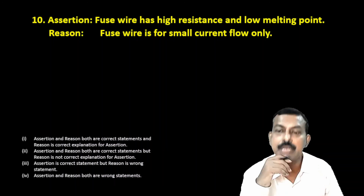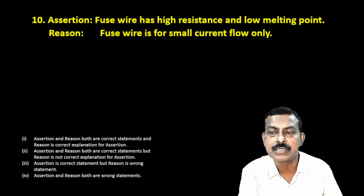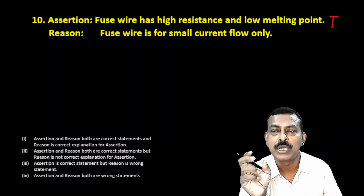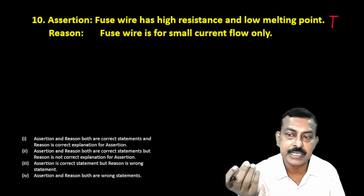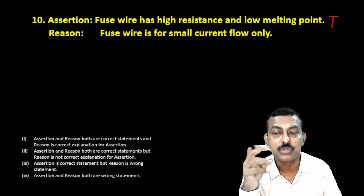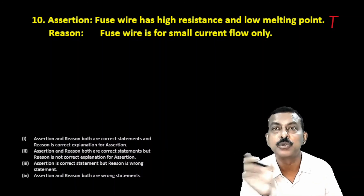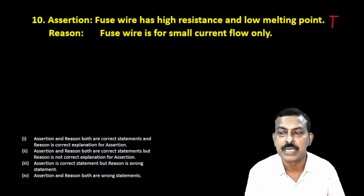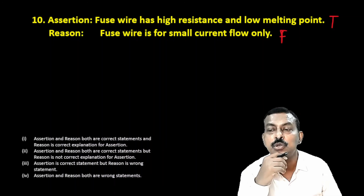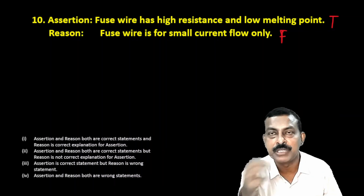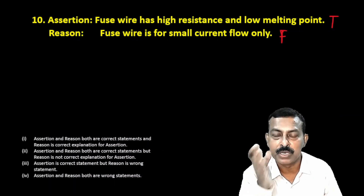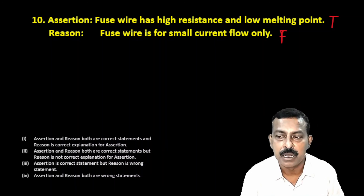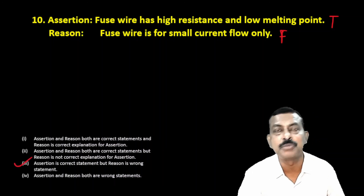Next question. Assertion: the fuse wire has high resistance and low melting point. This is true — high resistance ensures more heat is produced, and low melting point ensures it melts quickly to break the circuit when excess current flows. Reason: fuse wire is for small current flow only. This is false — fuse wire is used to protect circuits and appliances by breaking the circuit whenever a high current flows. So assertion is true, reason is false — the third option is correct.